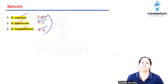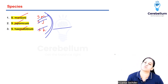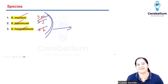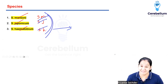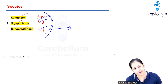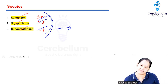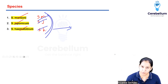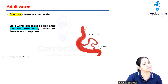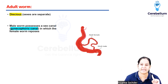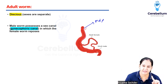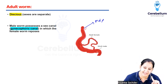This is a unique property of Schistosoma: male and female are different - the sexes are not the same, they are separate. In all other trematodes, sexes are the same. Except in Schistosoma, where sexes are separate. You can see this is the male and this is the lean, slim female.